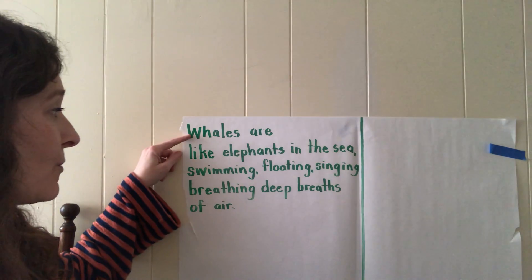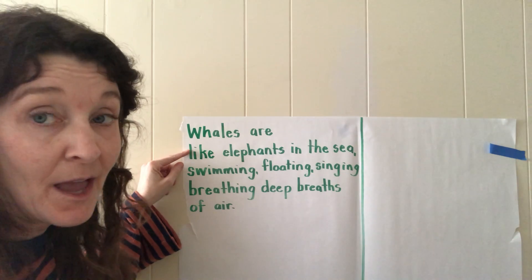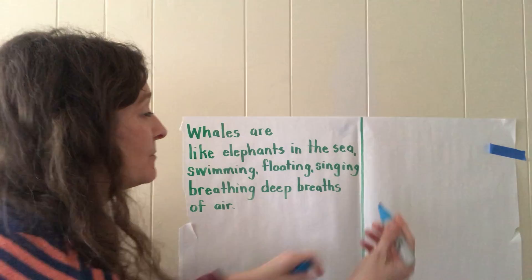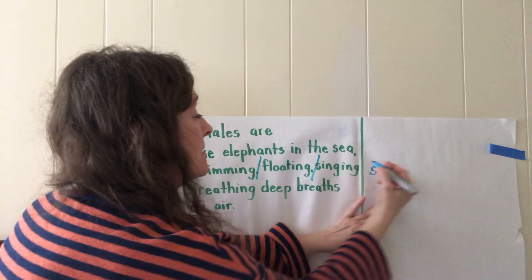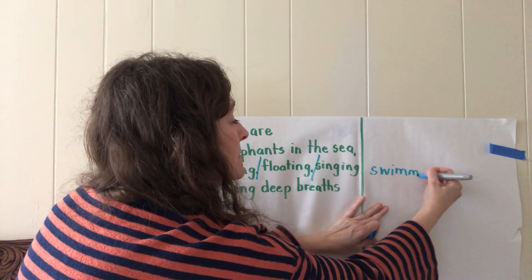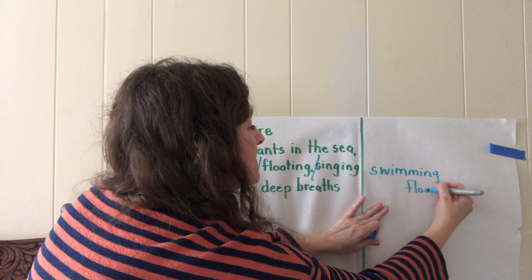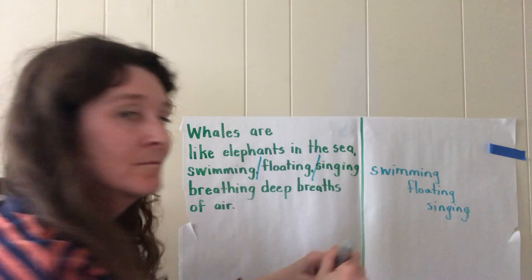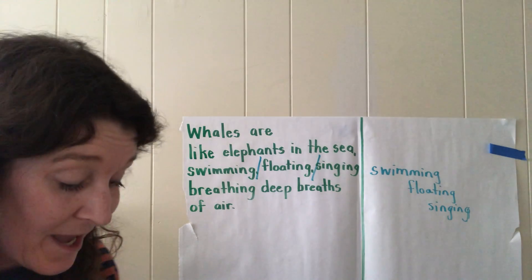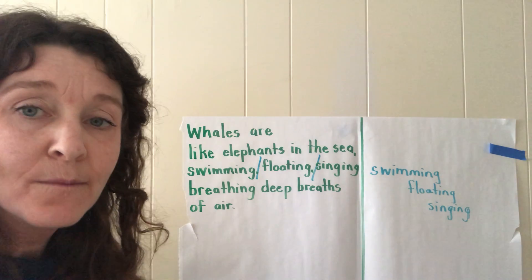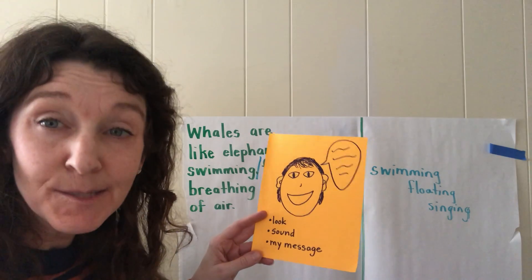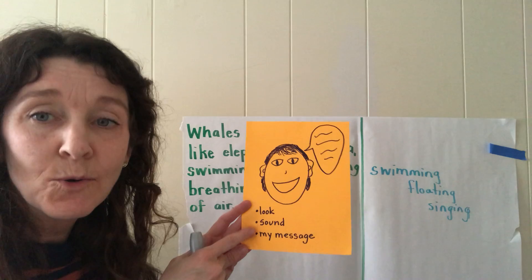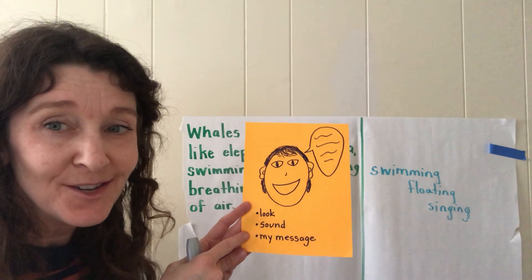You might think about this part — 'whales are like elephants in the sea' — you may want to add some line breaks. For me, when I think about the parts 'swimming, floating, singing,' I definitely want to put those on separate lines and put line breaks. So it might look like this: swimming, floating, singing. So today, as you're writing, drafting, and revising your poems, think about how you want them to be displayed on the page — how do you want them to look, how do you want them to sound when your reader reads them, and do all of the moves you make for displaying them support your message? Have fun!